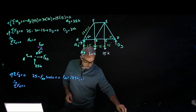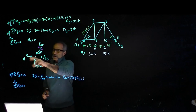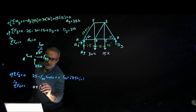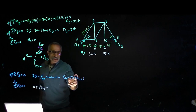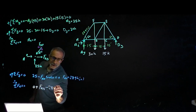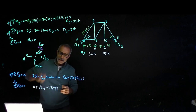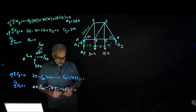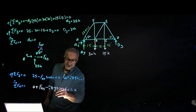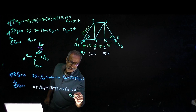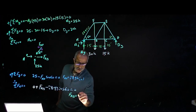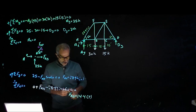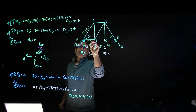AX is 0 so we don't count that. Then we have F of AB, and minus the horizontal component of F of AF — which came out to 28.97 — times cosine 60, equals 0. Solving, F of AB comes out to 14.4 kips, and that's in tension because it's going away. So I'll write that up: 14.4 kips in tension.